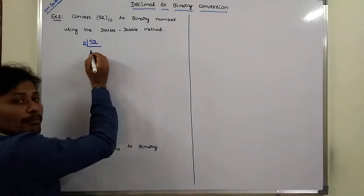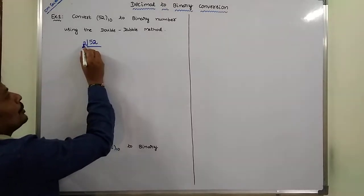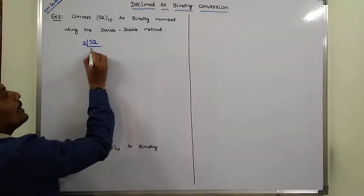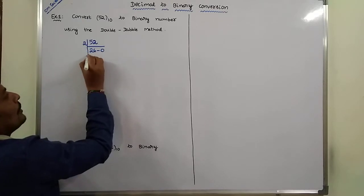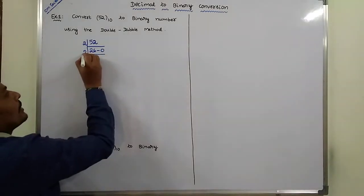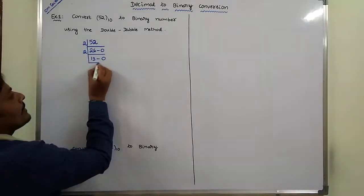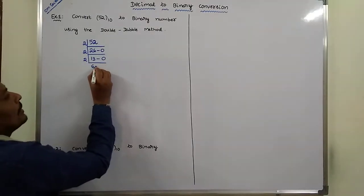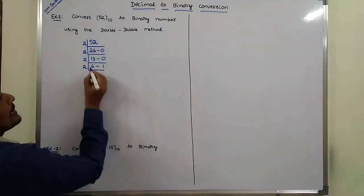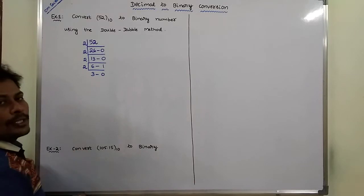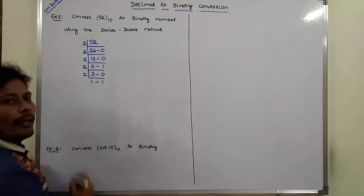For that purpose, we use the successive division by two method. 2 divides 52, 26 times, remainder is 0. 2 divides 26, 13 times, remainder is 0. 2 divides 13, 6 times, remainder is 1. 2 divides 6, 3 times, remainder is 0. 2 divides 3, 1 time, remainder is 1.